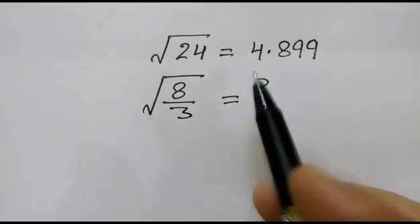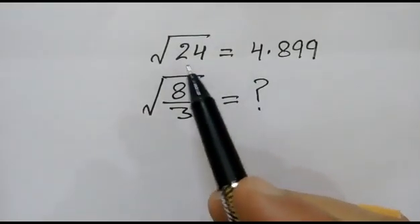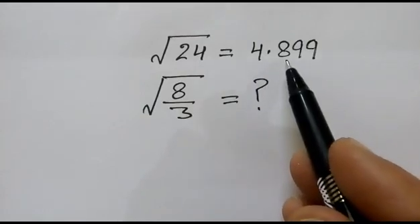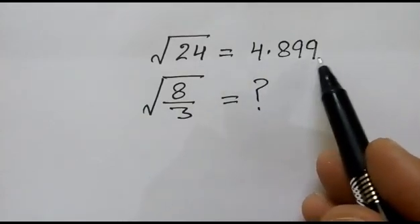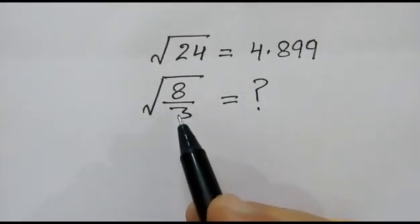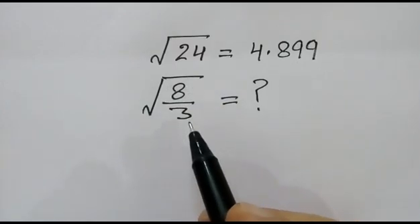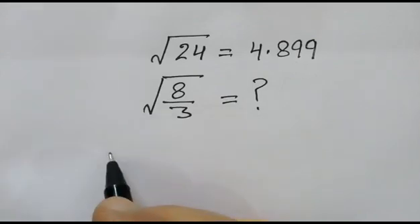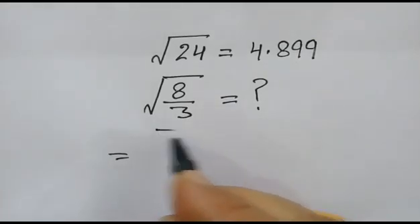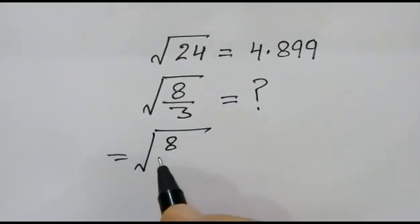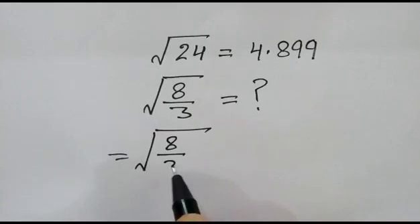Hi friends, we have given that square root of 24 is equal to 4.899. We have to find out the value of square root of 8 over 3. So first, square root of 8 over 3.